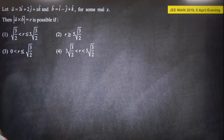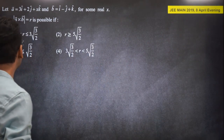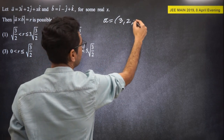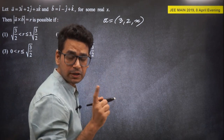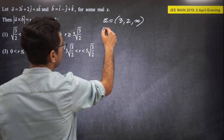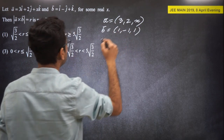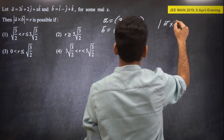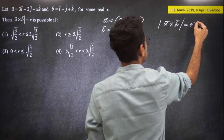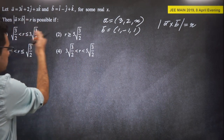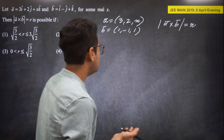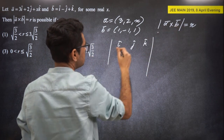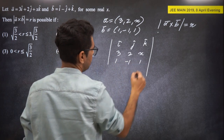Next question: 2019 April evening. Vector A = (2, X, 1) where X is a real parameter. B = (1, -1, 1). We need to find the possible values of |A×B|. Since X is a parameter, we expect the answer to be a range/inequality.